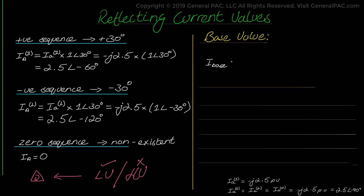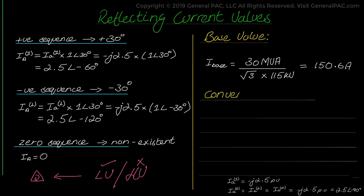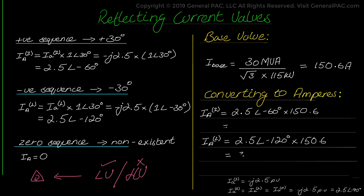Since we are working on the high-voltage side of the transformer, we divide the base value of power, which is 30 MVA, by the high side voltage of 115 kV, to get a base value of 150.6 amps. Then we multiply the per unit values with the base values to get ampere quantities. We get 377 amps at angle negative 60 degrees as the positive sequence current and 377 amps at angle negative 120 degrees as the negative sequence current.